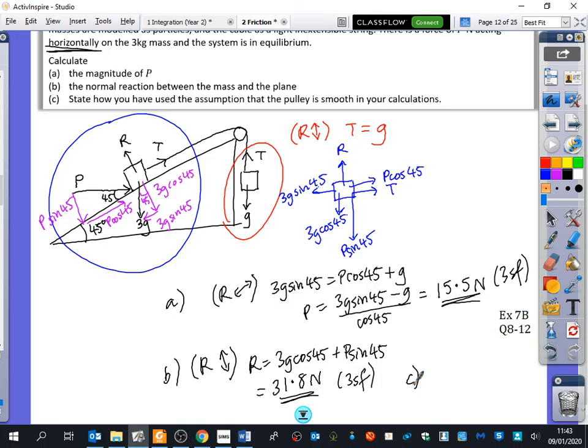So part C says, how have you used the assumption that the pulley is smooth in your calculations? Well, what did we say that one was? The tension on either side of the pulley is equal. So what we would say here for part C, tension on both sides of pulley is equal or the same. And actually, we've used that in the calculation, haven't we? We used that T was G over here. We used that it was G over here. Smooth pulley, same tension. Inextensible string, same movement. Light string, what did we say about light string? No mass, but what does that mean about the tension? Same tension throughout.